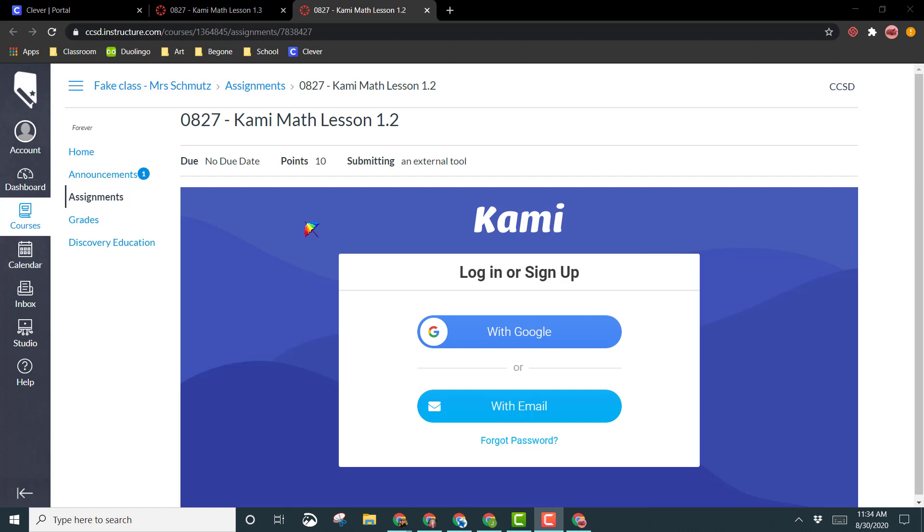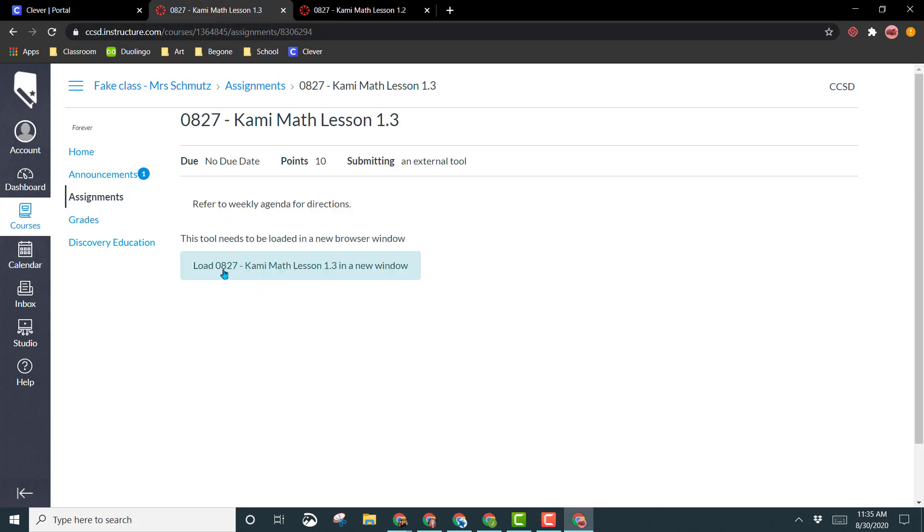So when you open the assignment, you might see a window like this with Kami where you need to log in with Google to get to the assignment. You might also see it where they're having it load in a new window, so you'll see that you need to click on this button to load the assignment in a new window. I've already logged into Kami once, so it's not going to ask me to log in again with my Google account. It's going to bring me right to the assignment.